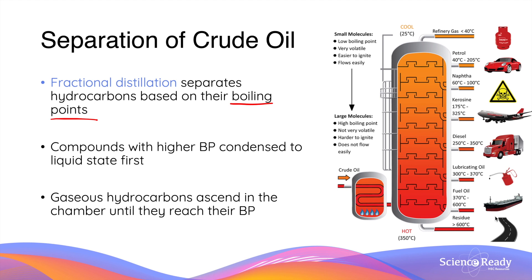In this picture, these are the fuel oil and the residue, also known as bitumen for road construction. As the remaining gaseous hydrocarbons rise up in the chamber, the temperature of the chamber decreases. When the temperature reaches the boiling point of a particular hydrocarbon, it is condensed into liquid state and therefore separated from the mixture in the same way as before.